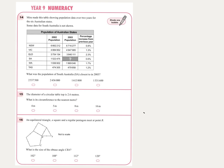Question 14: Mira made a table showing population data over two years for the six Australian states. Some data for South Australia is not shown. What was the population of South Australia closest to in 2003? You can use elimination — the growth is 0.6 percent, which is less than one percent, so one percent would be roughly 15,000.